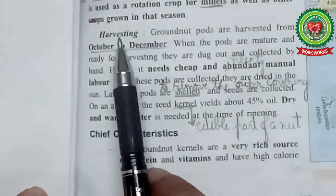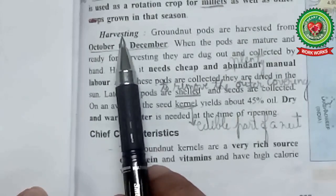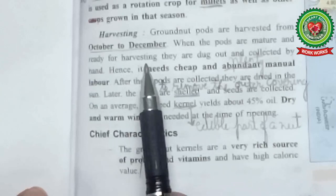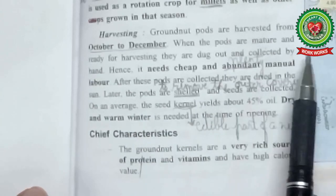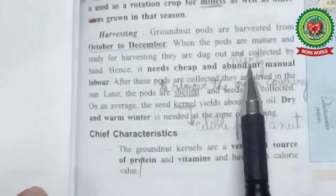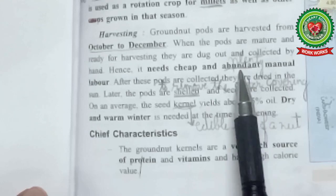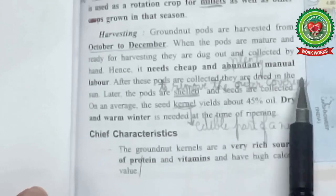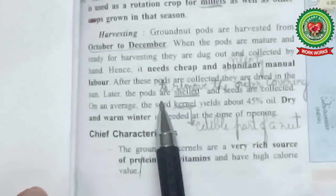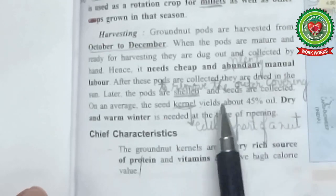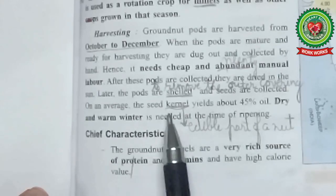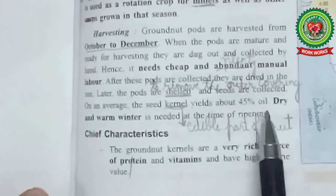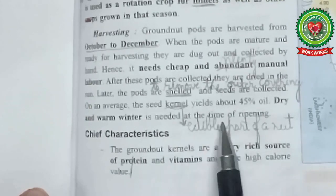Next is harvesting. Groundnut pods are harvested from October to December. When the pods are matured and ready for harvesting, they are dug out and collected by hand — hence it needs cheap and abundant manual labour. After the pods are collected, they are dried in the sun. Later, the pods are shelled — that is, the outer covering is removed — and seeds are collected. On an average, the seed kernel yields about 45% oil. Dry and warm winter is needed at the time of ripening.